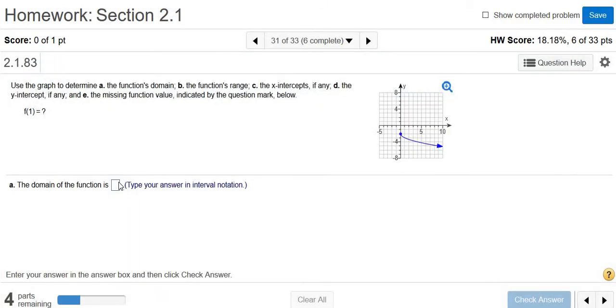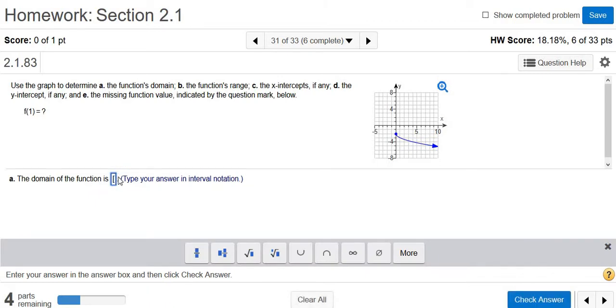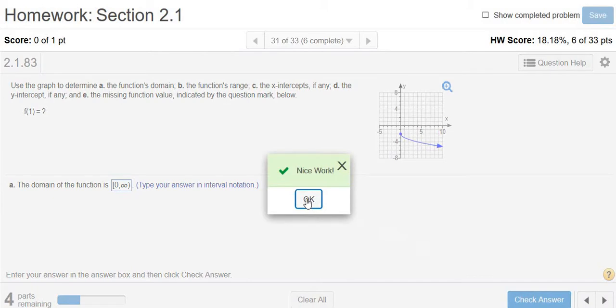We use a bracket on the 0 because we have a solid dot at the 0. If there was a hole here, it would be a parentheses. So 0 to infinity. Let's try it. Good stuff.